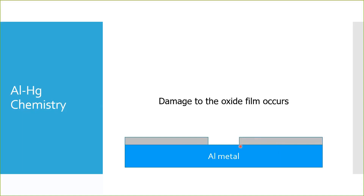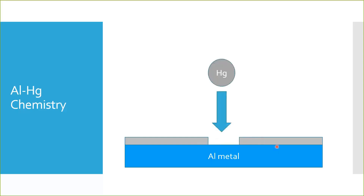Normally, this pit will re-passivate with more aluminum oxide right from the metal and heal itself. But it doesn't do that in the presence of mercury.